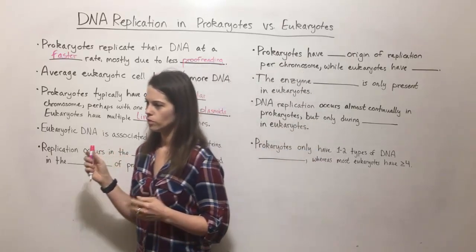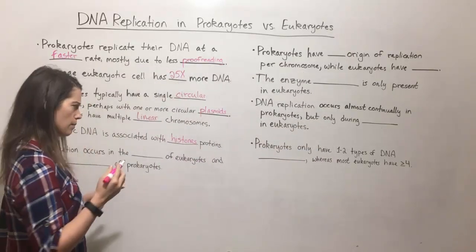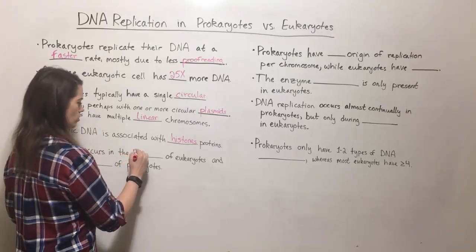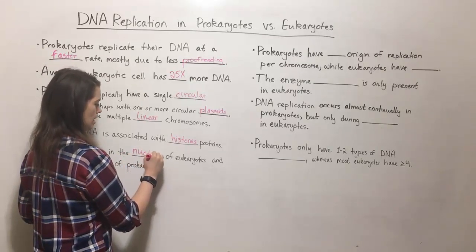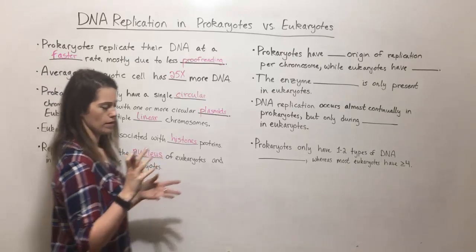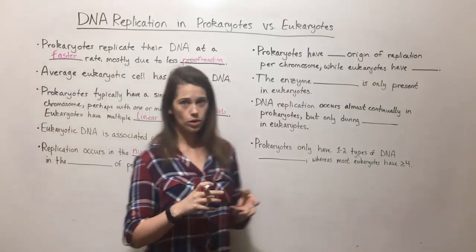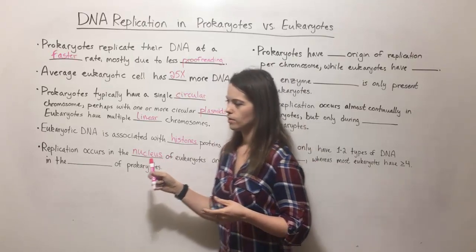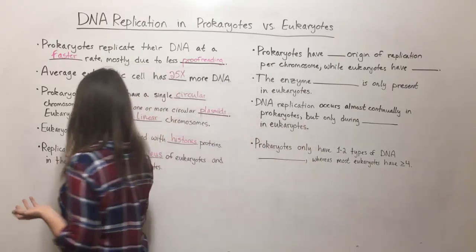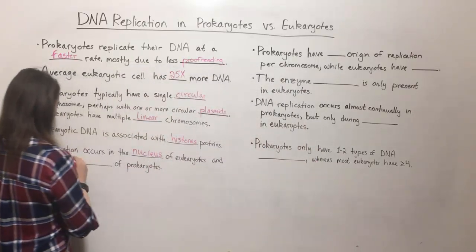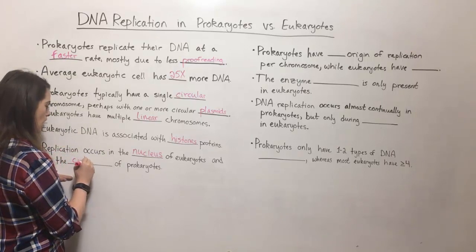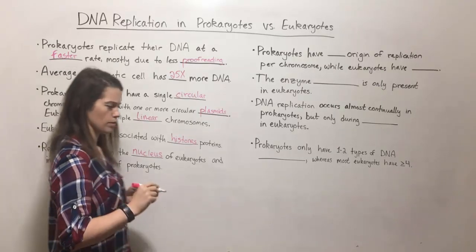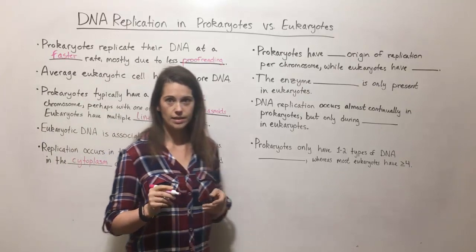Replication of DNA also occurs in different compartments. In eukaryotes it's done in the nucleus — that's where the DNA is stored and also where it's replicated. With prokaryotes, DNA replication happens in the cytoplasm, because prokaryotes do not have a nucleus, so their chromosome is just hanging out in the cytoplasm.